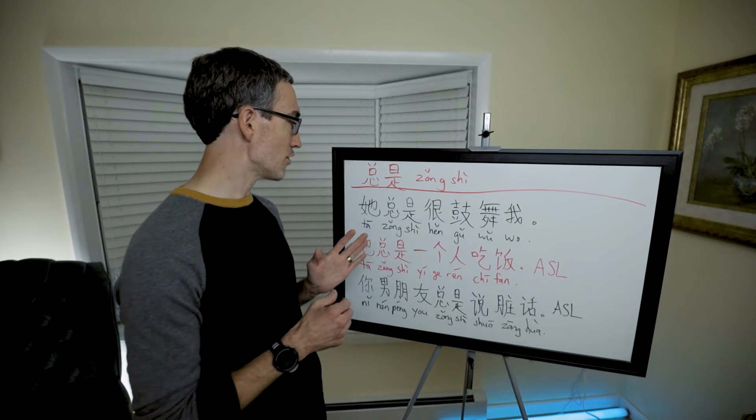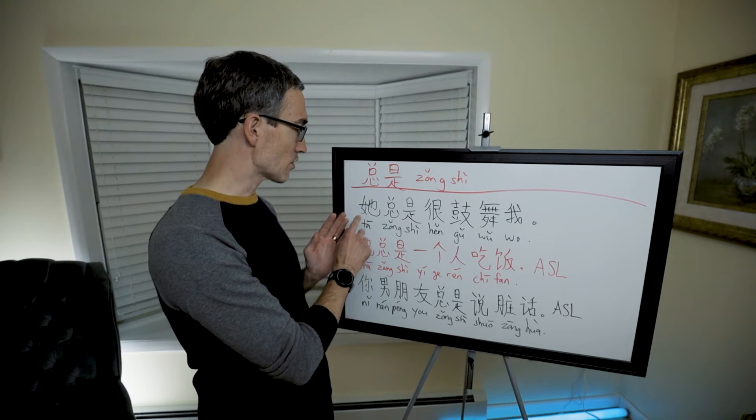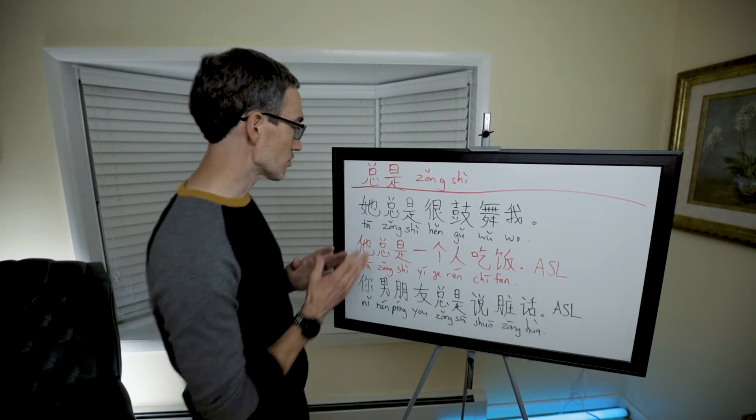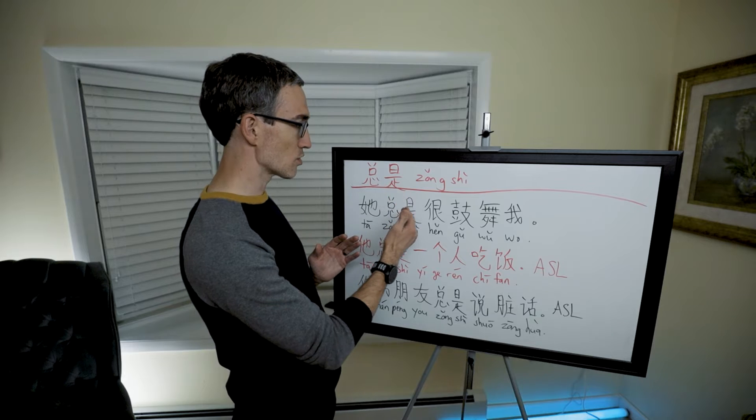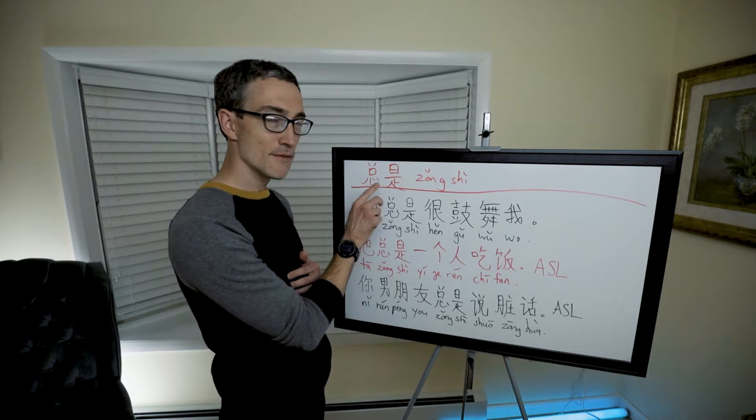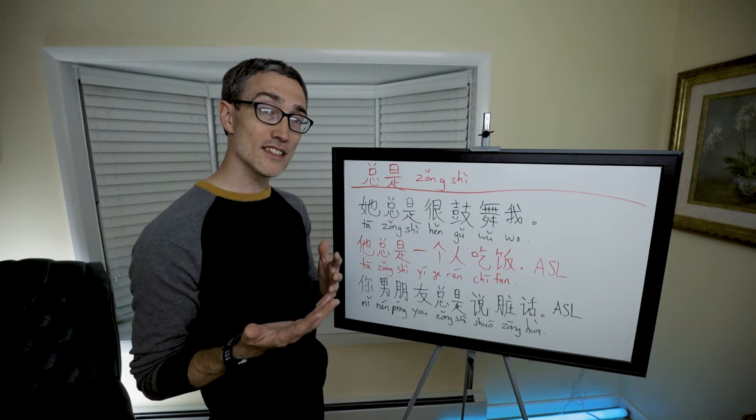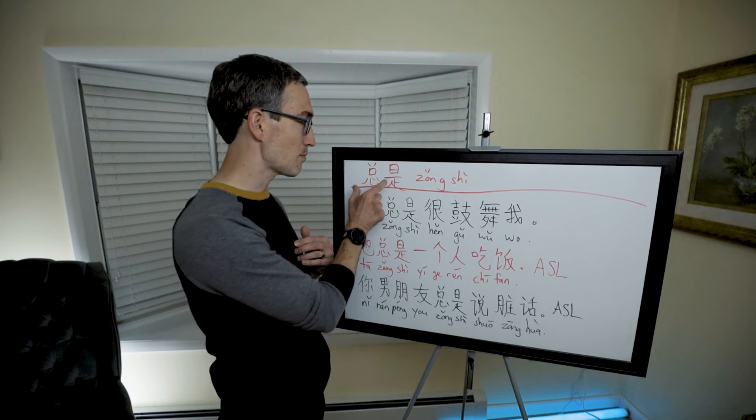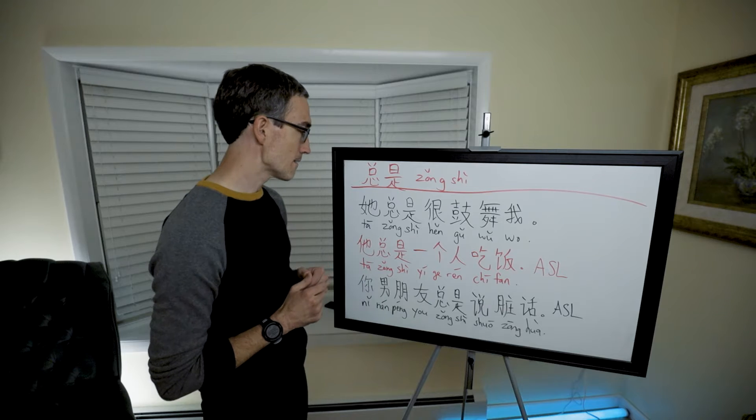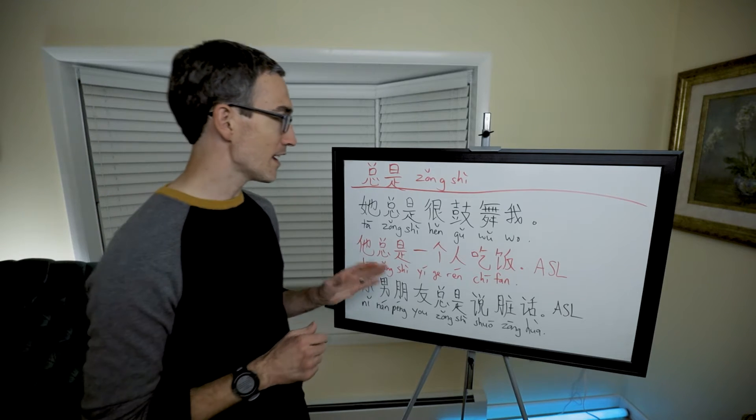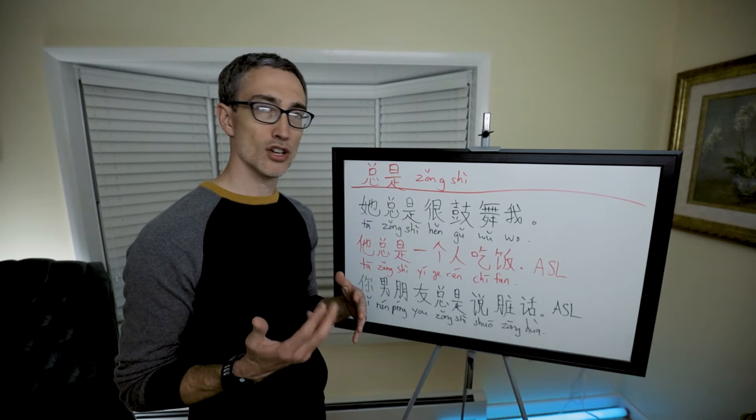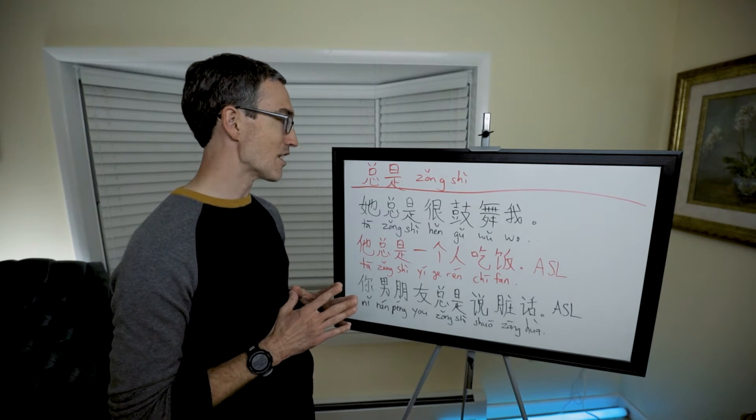We're going to start with the one that is kind of the most generic, and its scope of meaning is just like the English word always. It is an adverb, and it's 总是, and it's going to always come right before the predicate that it modifies. So it's going to come after the subject, then 总是, and then the predicate phrase. I want to point out that the 是 is the same 是 as in the to be verb, but it doesn't mean that. It's just part of this word. This word is a unit, 总是, meaning always. So let's jump in. We have three different examples here, and they all have different tones, different connotations.